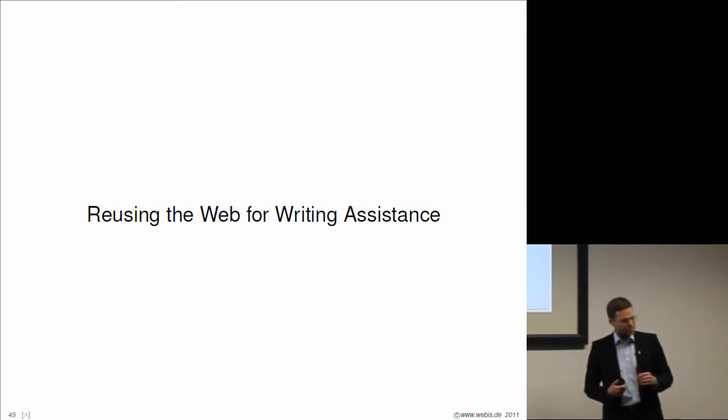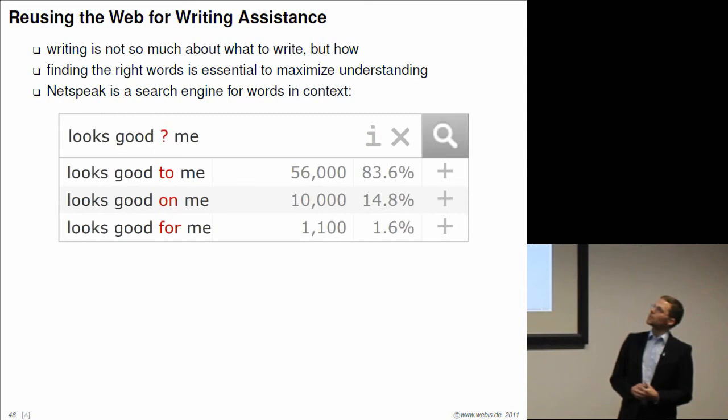In the next and third and last part of the talk for today, I will describe a new tool which we have developed for reusing the web to assist writers. The tool is called Netspeak. Let's start with a quick example. If you want to write looks good me, which preposition would you take? The answer is already given away. Anyway, these numbers have to account for something. These numbers, actually this is a query which you can post to our search engine which we have developed. It is a wildcard query and this stands for exactly one word. Netspeak finds all the phrases which contain all the words, plus it finds all the words which may go in place of the question mark.